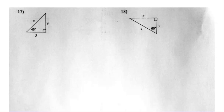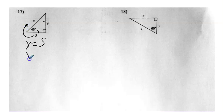Number seventeen — 45-45-90. These are equal. So Y is done already — it's five. And how do I go from the leg to the hypotenuse? Just tack on a radical two.